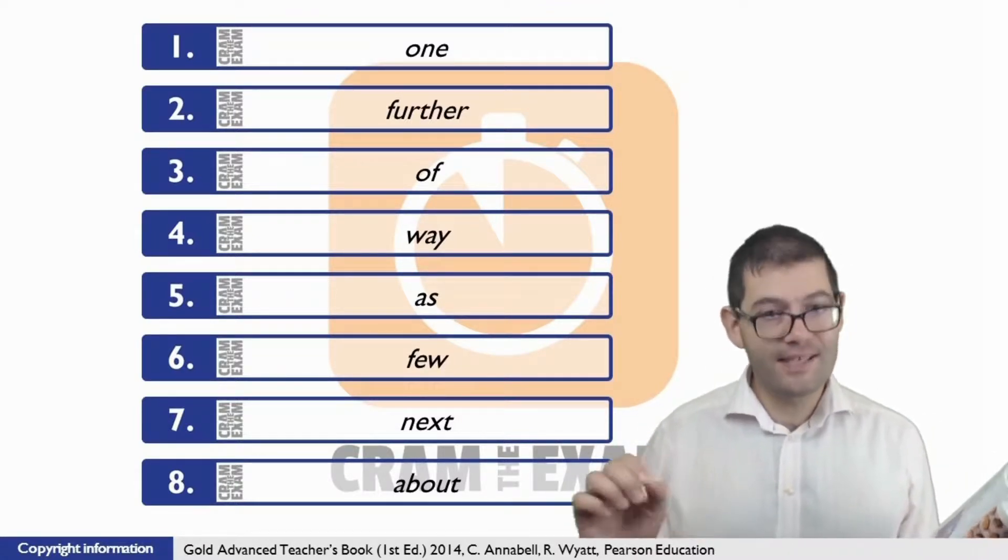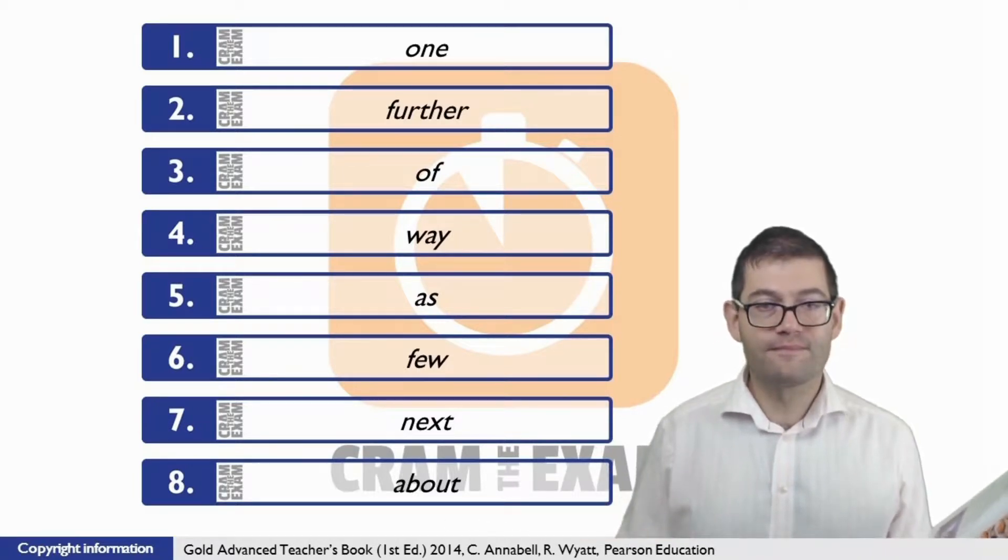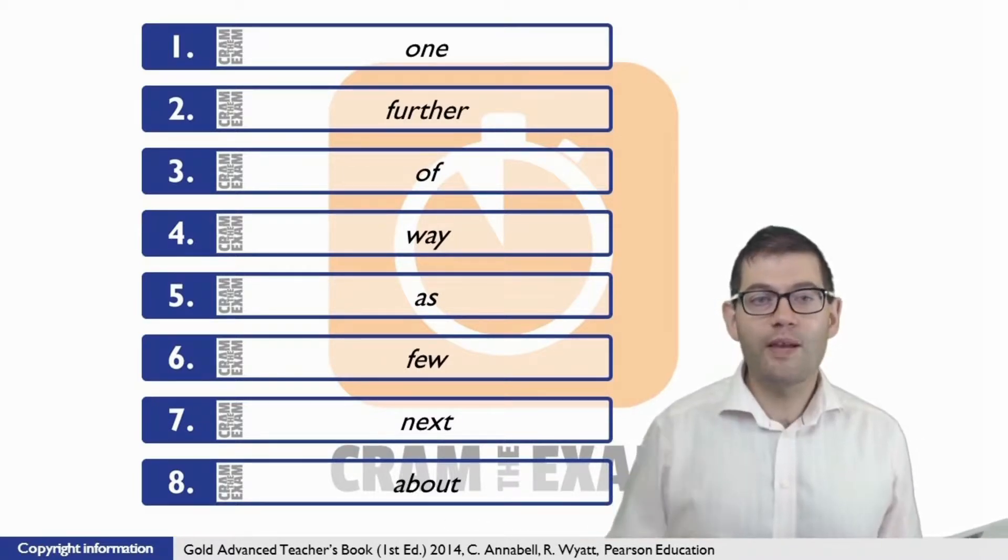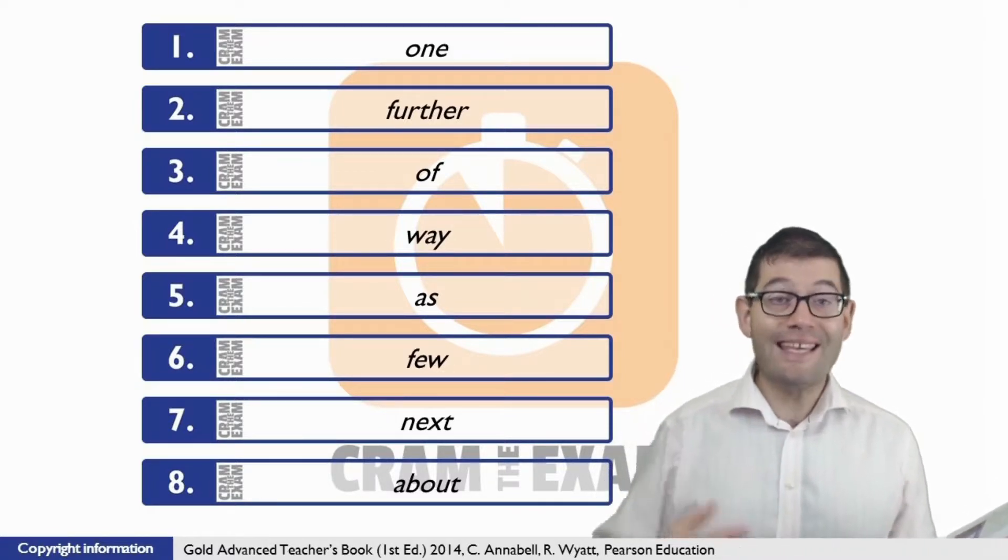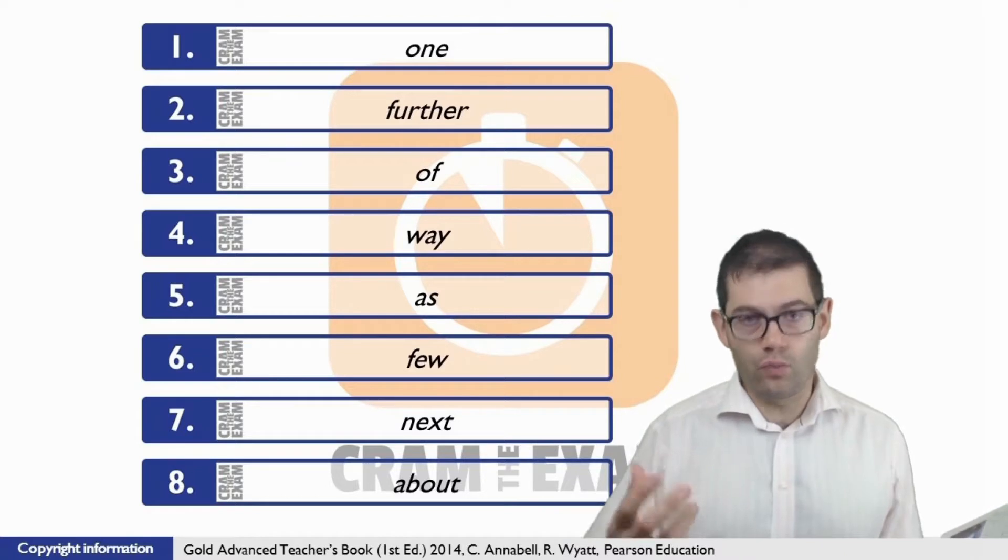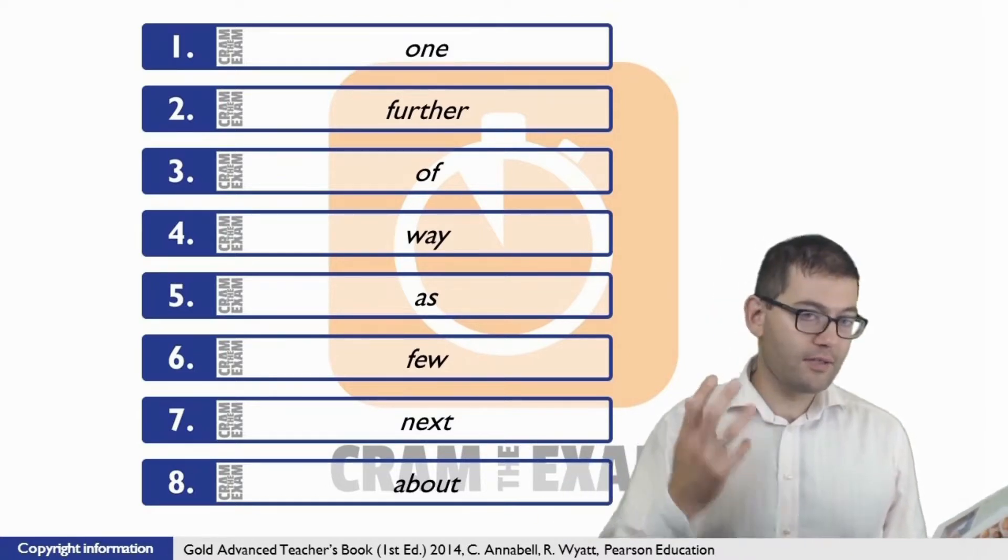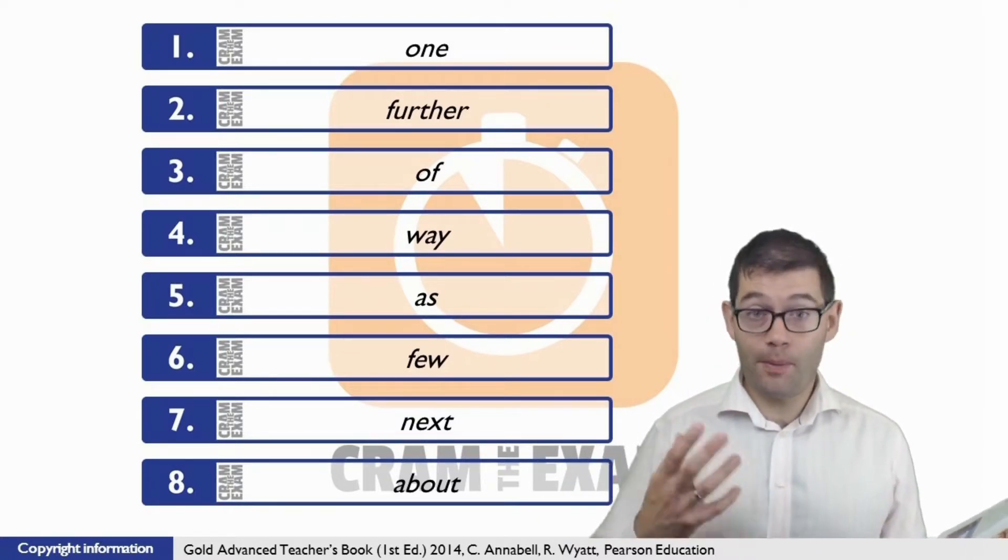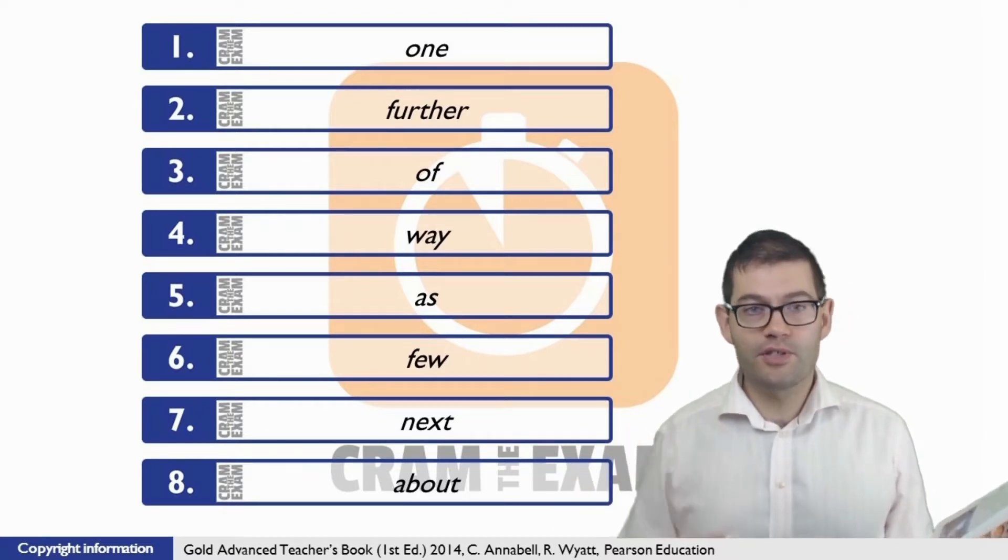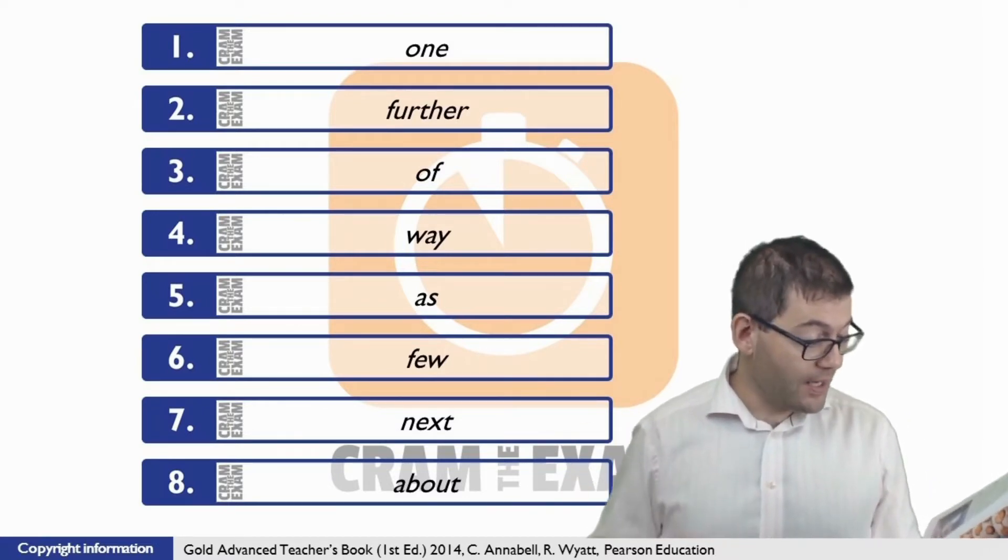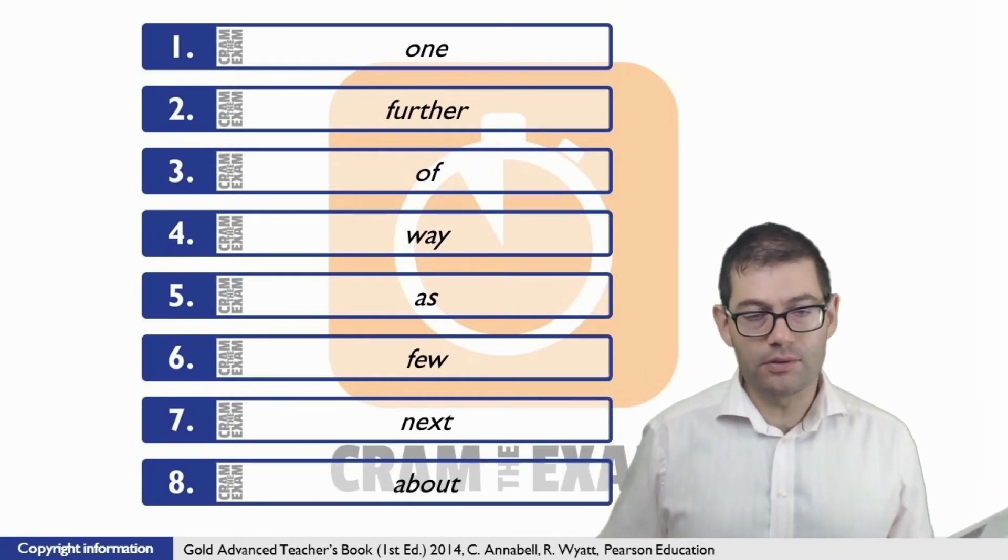For question number eight, once again, if we turn to context, we can see that the basic sentence is saying 'it's everything to do with something.' So what do we need here? Well, we need the preposition to complete the phrase to mean exactly that, and of course the preposition that we need is 'about.' They say 'it's all about' dot dot dot.